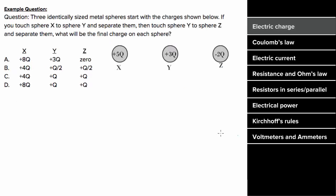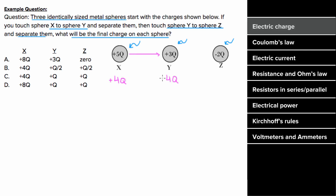Let's look at an example problem involving electric charge. Three identically sized metal spheres start off with charges of positive 5Q, positive 3Q, and negative 2Q. If we touch sphere X to sphere Y and separate them, the total charge has to be conserved. There's a total charge of 8Q amongst them, and since they're identically sized, they'll both share the total charge equally — so after they touch, they'll both have positive 4Q.